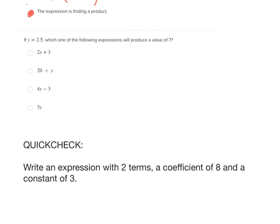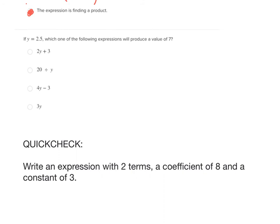If y equals 2.5, which of the following expressions will produce a value of 7? So we're actually evaluating an expression here. In order to do this, you have to substitute the y for 2.5. In other words, take a 2.5 and put it anywhere there's a y. So this first expression means 2 times y, so it would be 2 times 2.5, and then add 3. If I work that out, I multiply first. 2 times 2.5 is 5, and 5 plus 3 is 8. So it is not that.